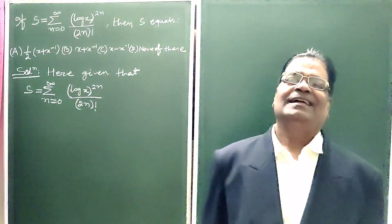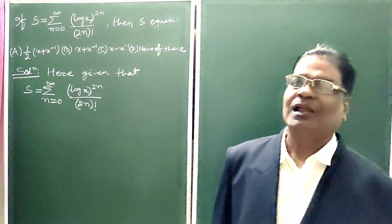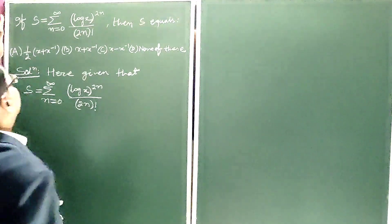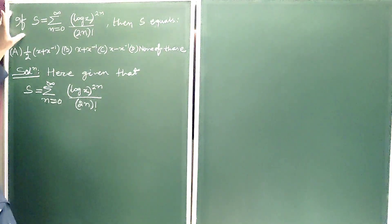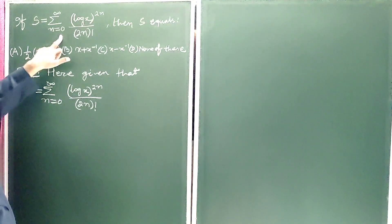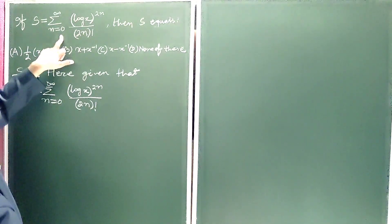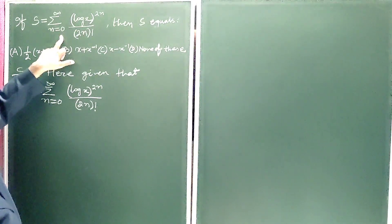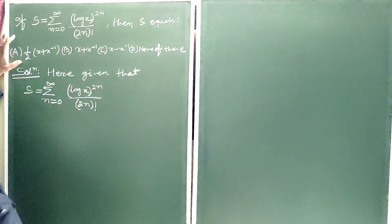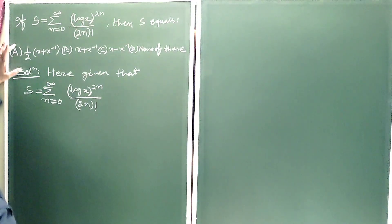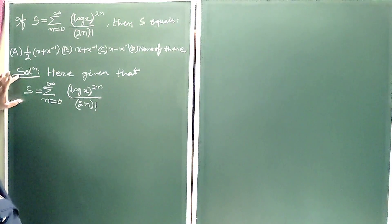Dear students, let us solve a problem on logarithmic series. The question is: if S is equal to summation from n equals 0 to infinity of (log x) to the power 2n divided by (2n) factorial, then find the value of S. Choices are given and we have to find the correct answer.